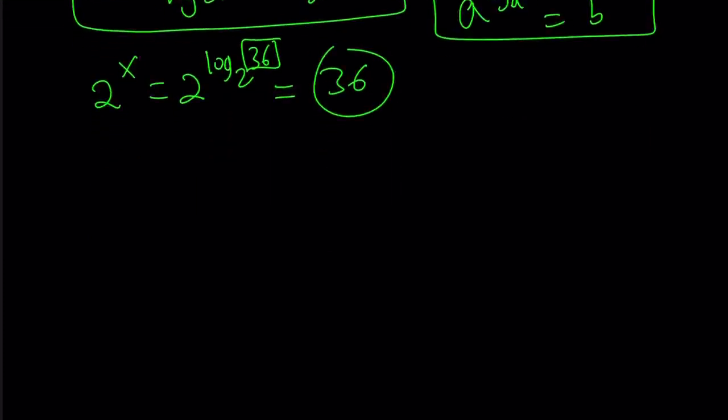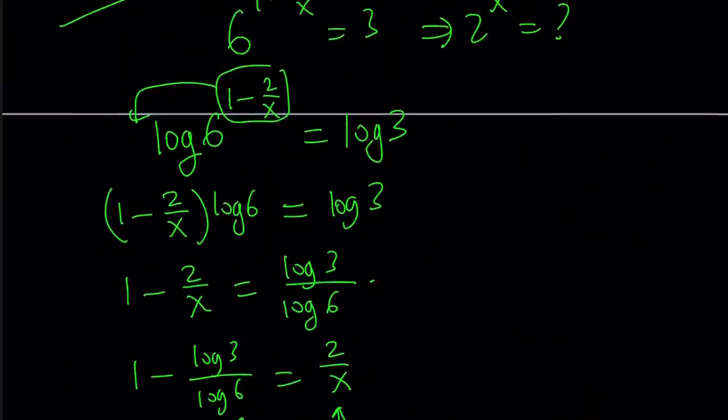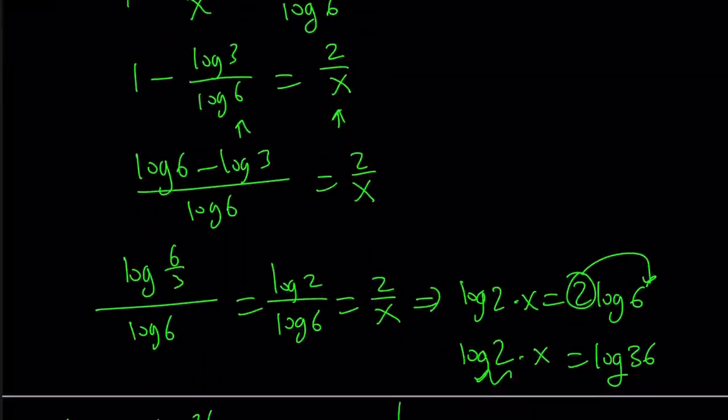Let's go ahead and take a look at the third method. So with the first method, this is basically what we did. We logged both sides and then isolated x, solved for x, and then we plugged it in. And obviously, we used a lot of properties here.